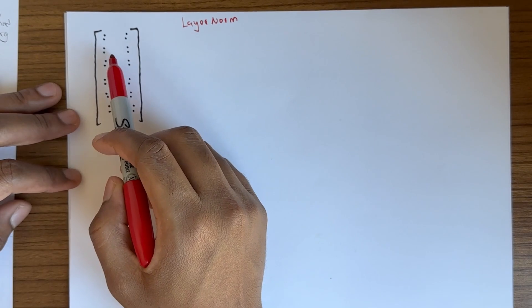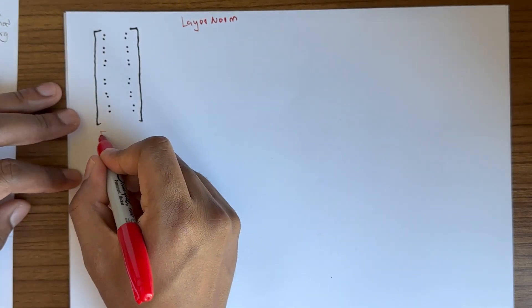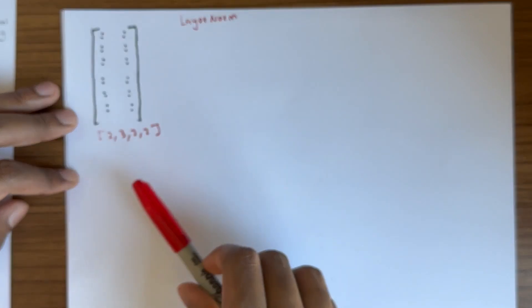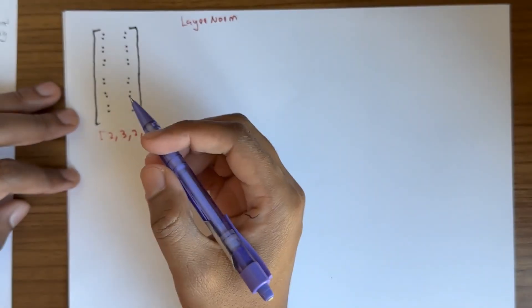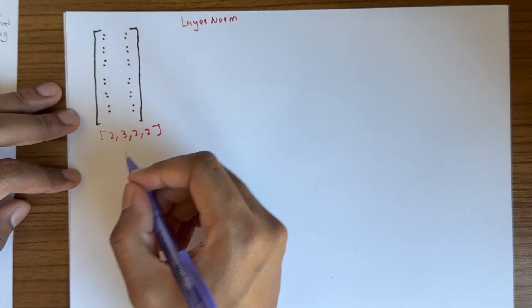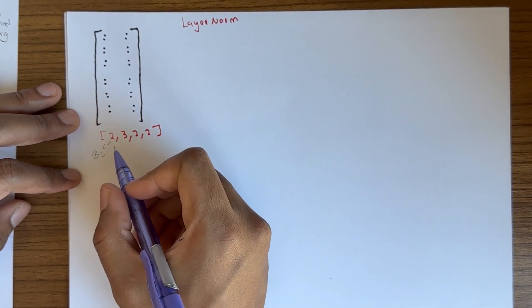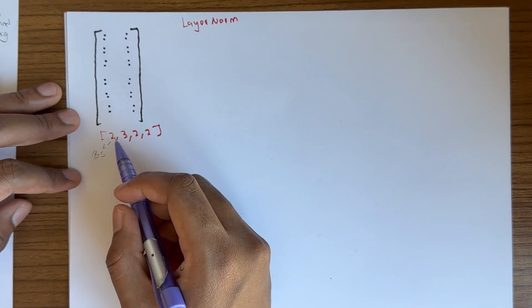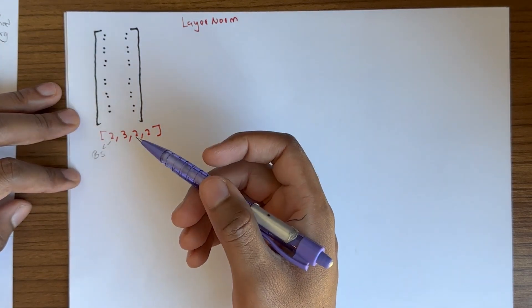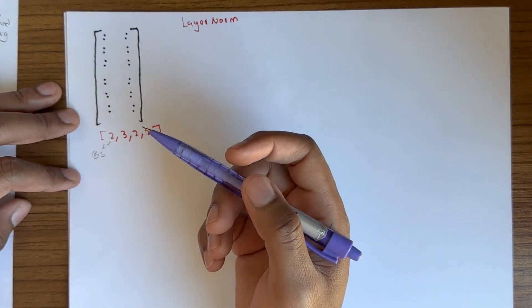Let's say we start with a tensor that has a dimension of 2 by 3 by 2 by 2. Just like we saw in batch norm 2D, this is the batch size. I included a batch size of 2 here just to show you that when computing the statistics, we are not going to rely on it, unlike batch norm 2D.